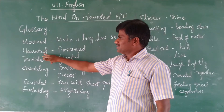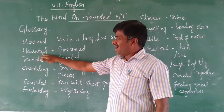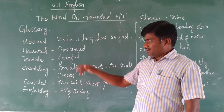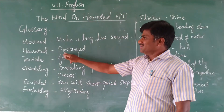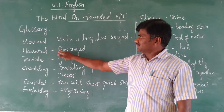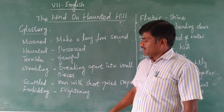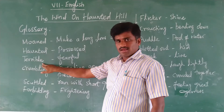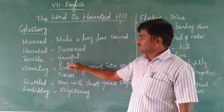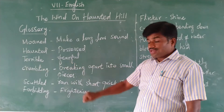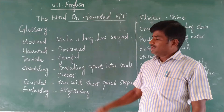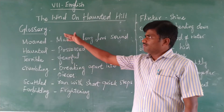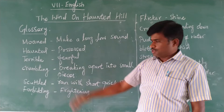That is called Mound. The second word is 'Haunted' — that is also the title of the lesson. The meaning of Haunted is 'possessive.' The next word is 'Terrible.' The meaning of Terrible is 'fearful' — something that is fearful. When going to the lesson you will come to know where the glossary is actually used.